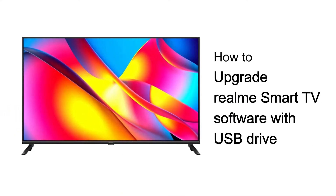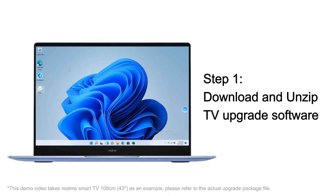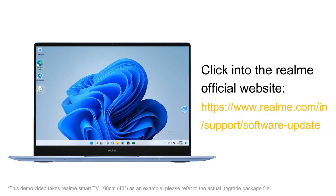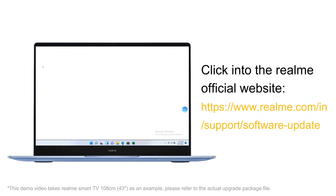How to upgrade Realme TV software with a USB drive. Step 1: Download and unzip the TV upgrade software. Please click into the Realme official website.